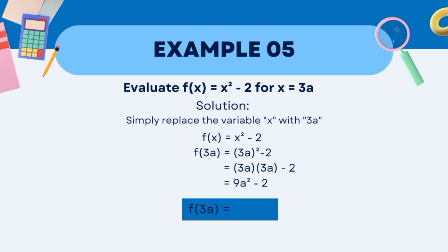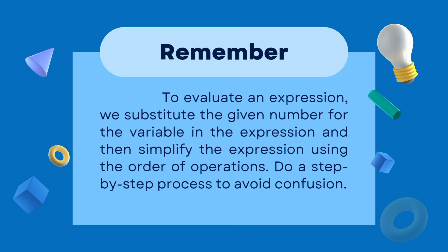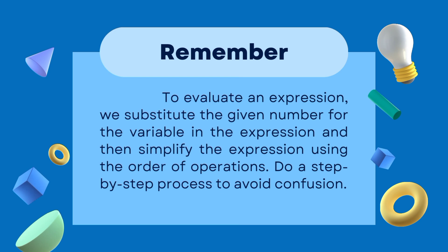No need to combine since they have different terms. Therefore, f(3a) = 9a² − 2. Now remember: to evaluate an expression, we substitute a given number for the variable in the expression and then simplify using the order of operations. Do a step-by-step process to avoid confusion.